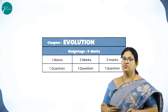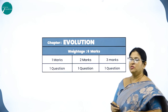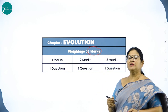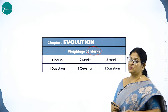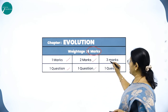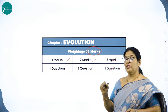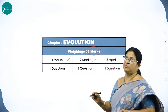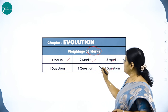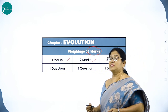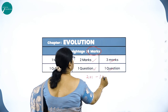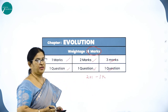The weightage of marks for Chapter 7, Evolution, is 6 marks. One one-marker question, one two-marker question, and one three-marker question. Sometimes the three-marker question may be broken as 2 plus 1 or asked for 3 marks directly.